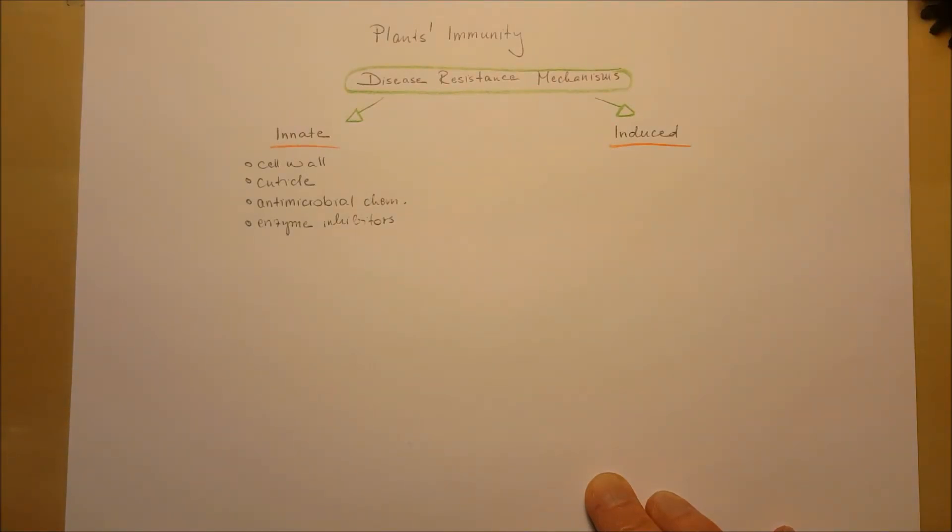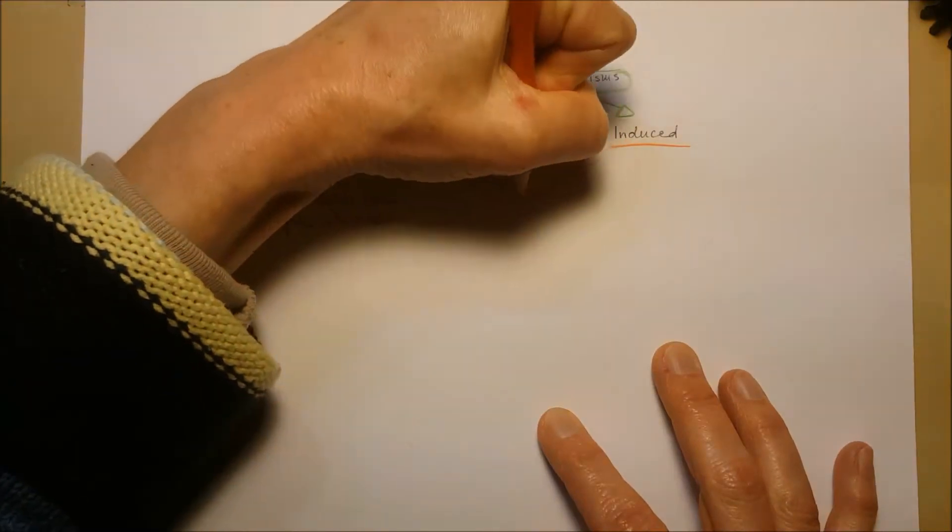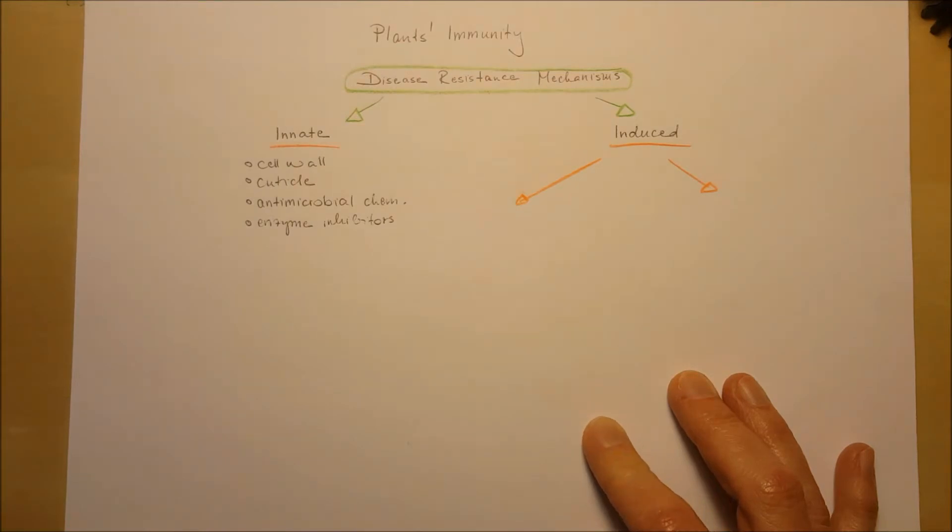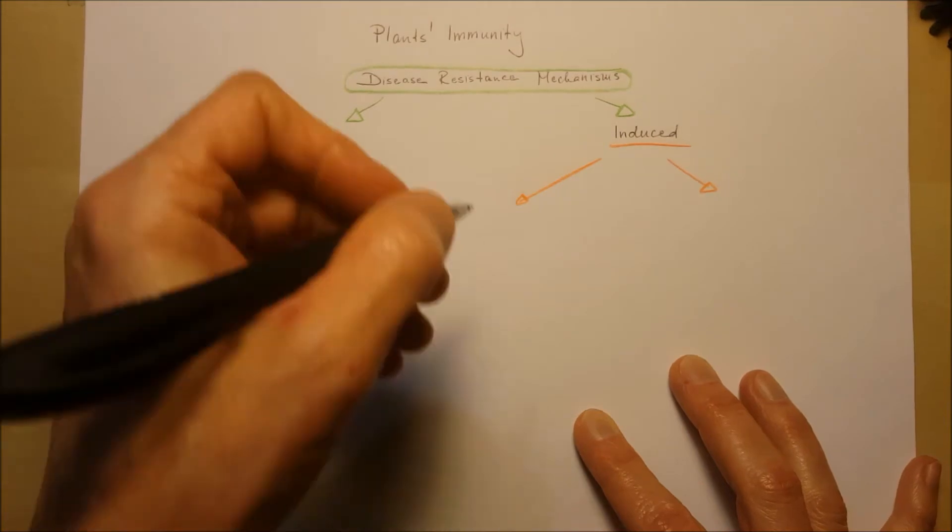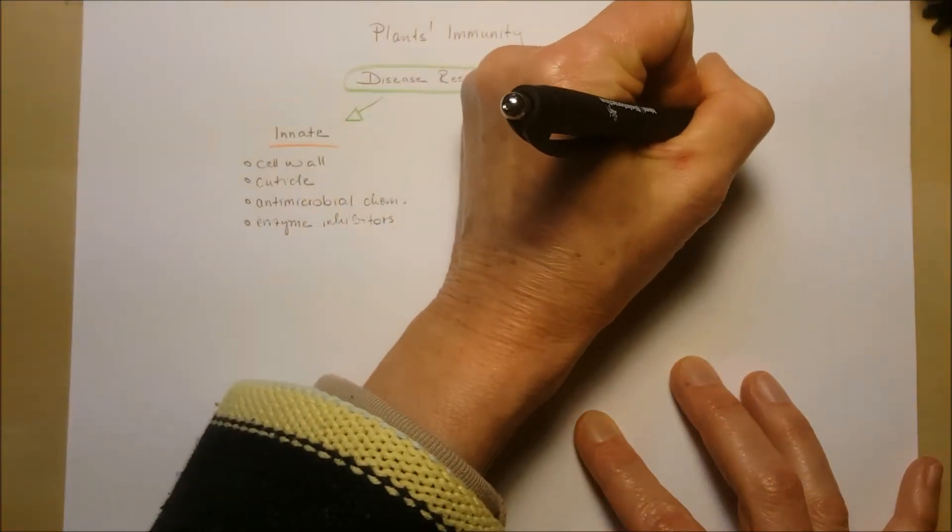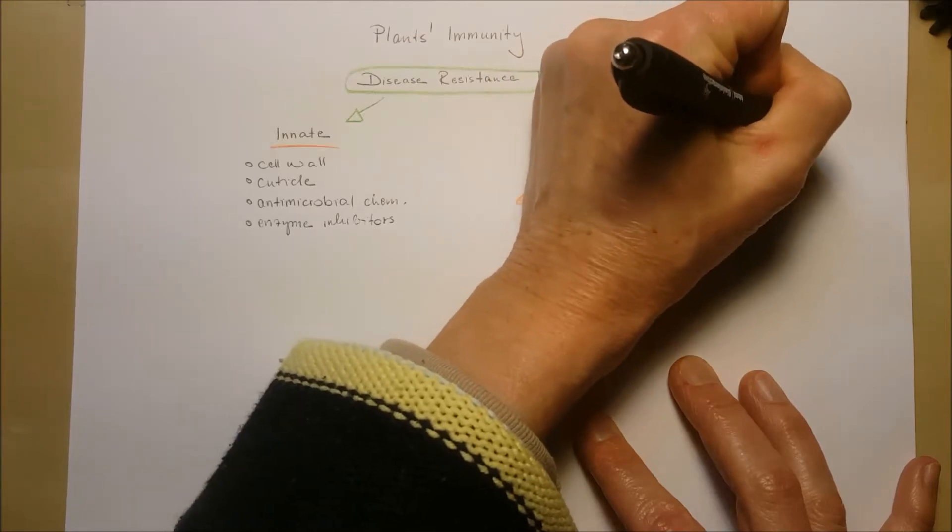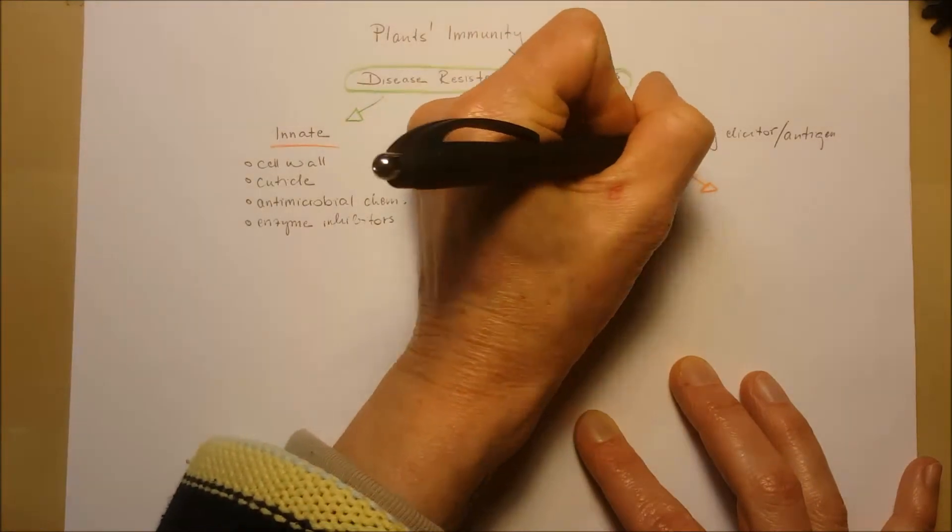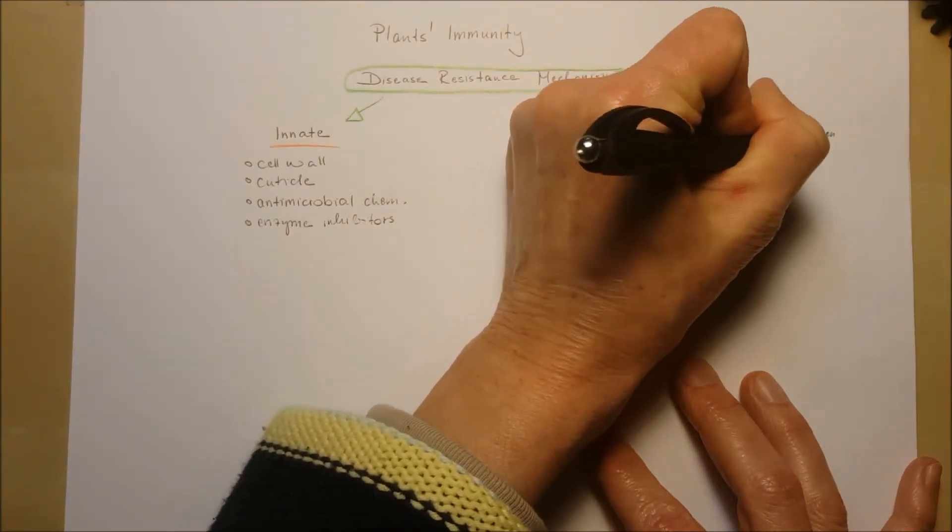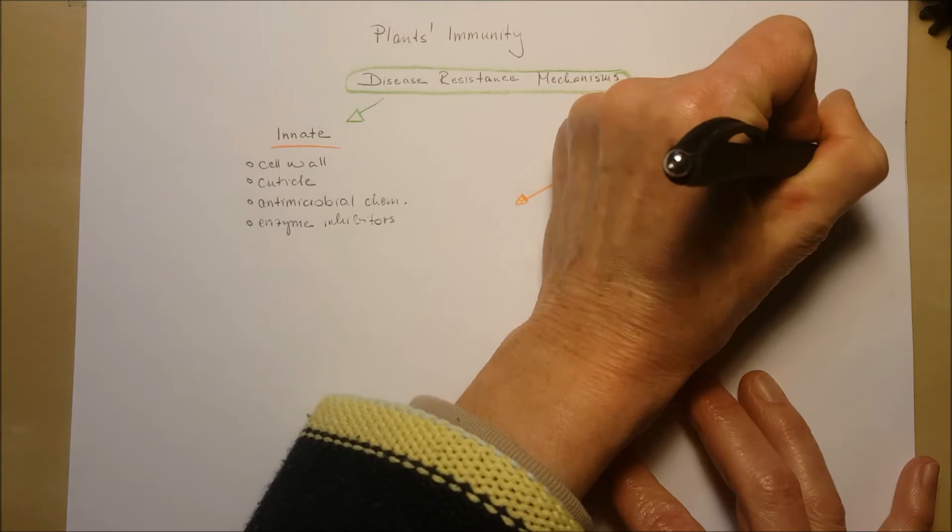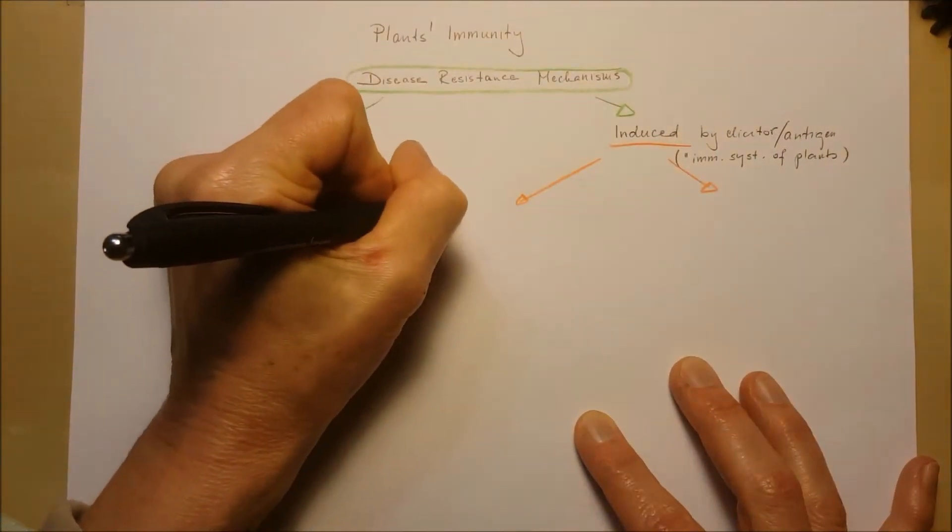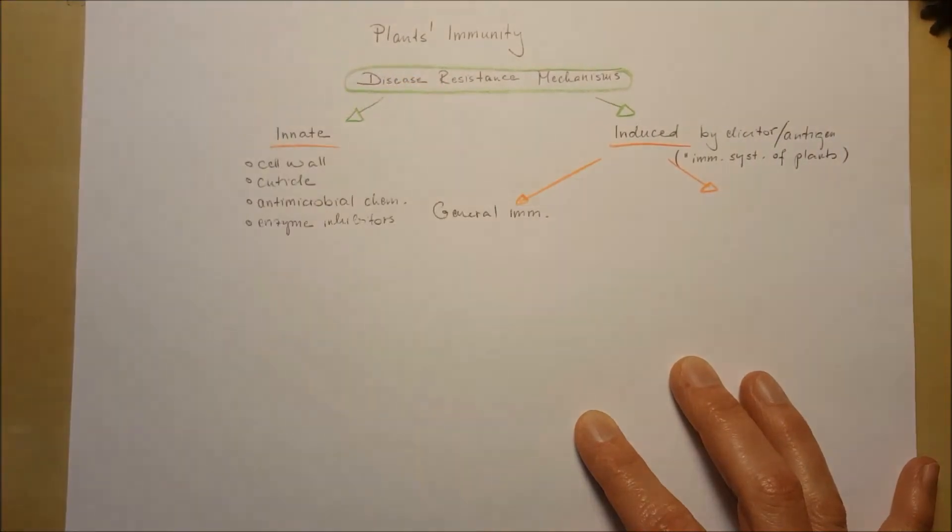These are given in the plant, but what happens when an elicitor or antigen enters the cell because they were able to pass the innate structures and chemicals? An elicitor or antigen is something that induces the defense response. This is basically the immune system of plants. They don't have adaptive or acquired immunity such as vertebrates.